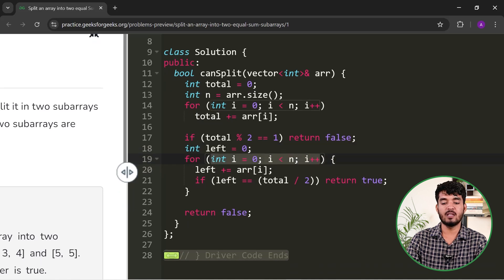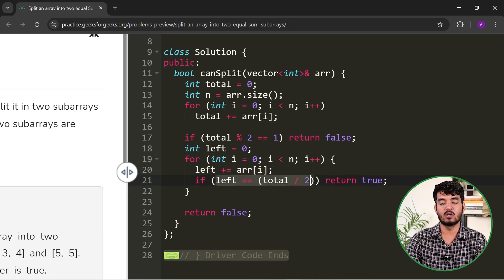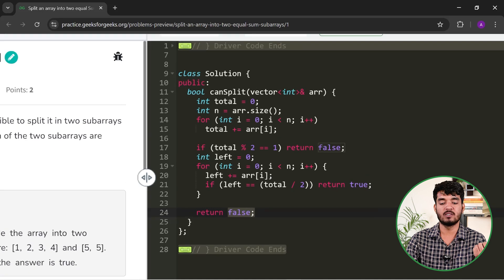Otherwise, initialize left sum with 0 and iterate over all indices, adding the current element to the left sum. Basically, left sum stores the sum from index 0 to i. If this sum equals total/2, then simply return true. Otherwise, after the for loop, return false. The time complexity is linear and the space complexity is constant since we have not used any extra array or string.